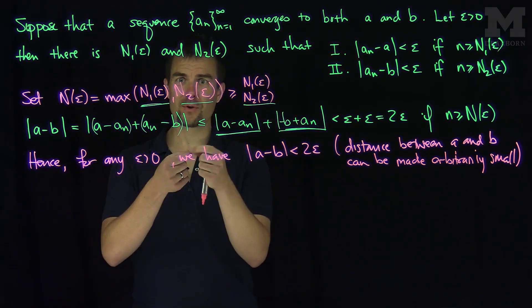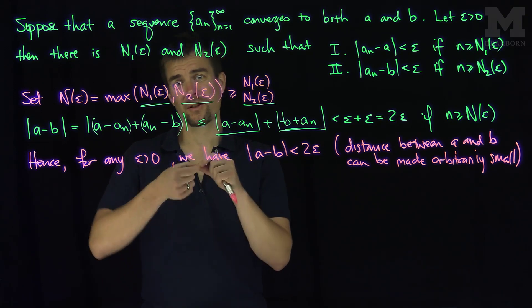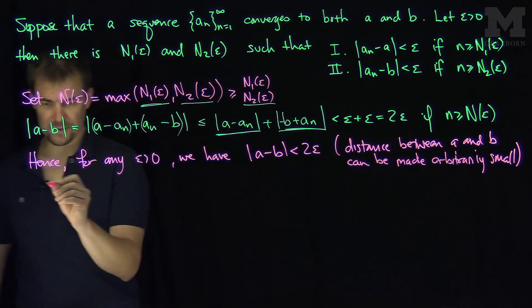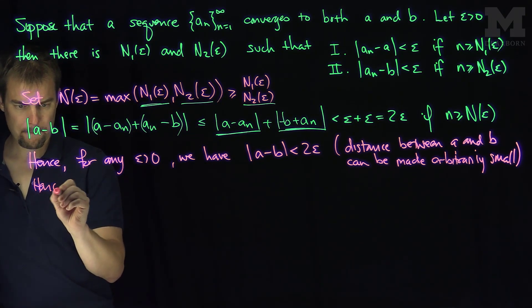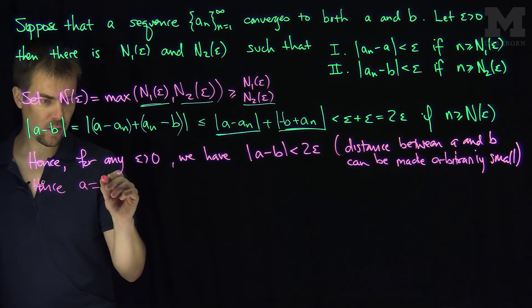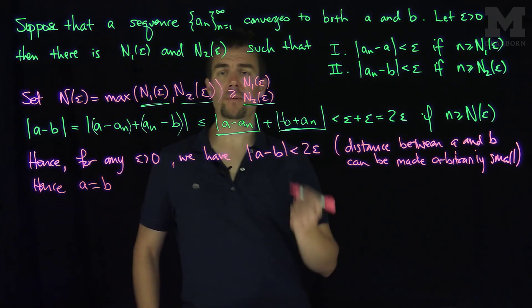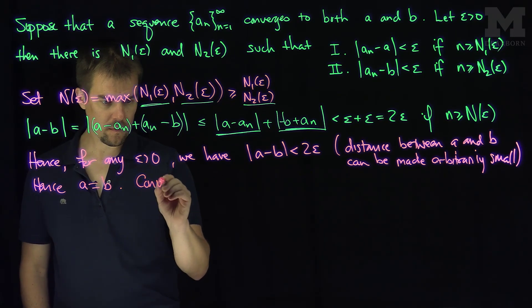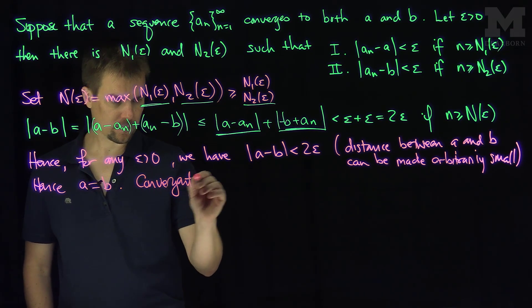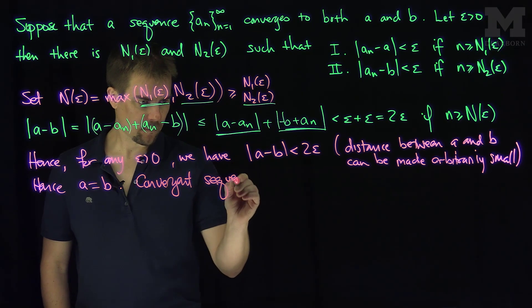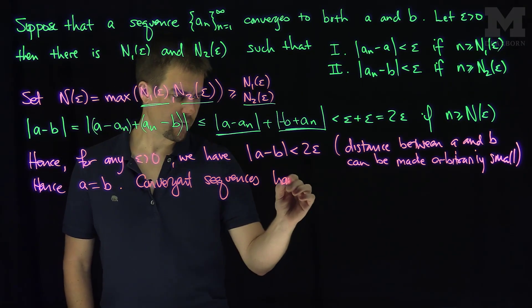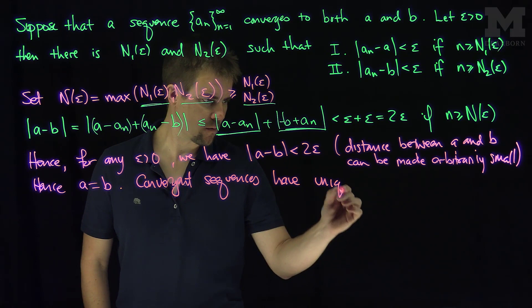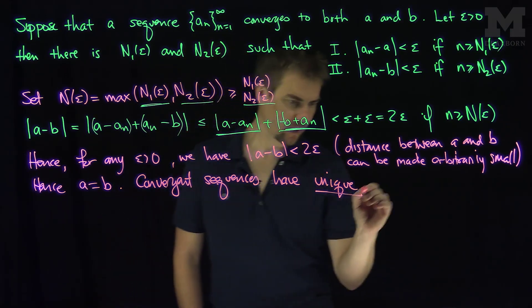If the distance between two numbers can be made arbitrarily small, those numbers have to be the same. This implies, hence, a is equal to b. And since a is equal to b, that means the limit is unique. So convergent sequences have unique limits.